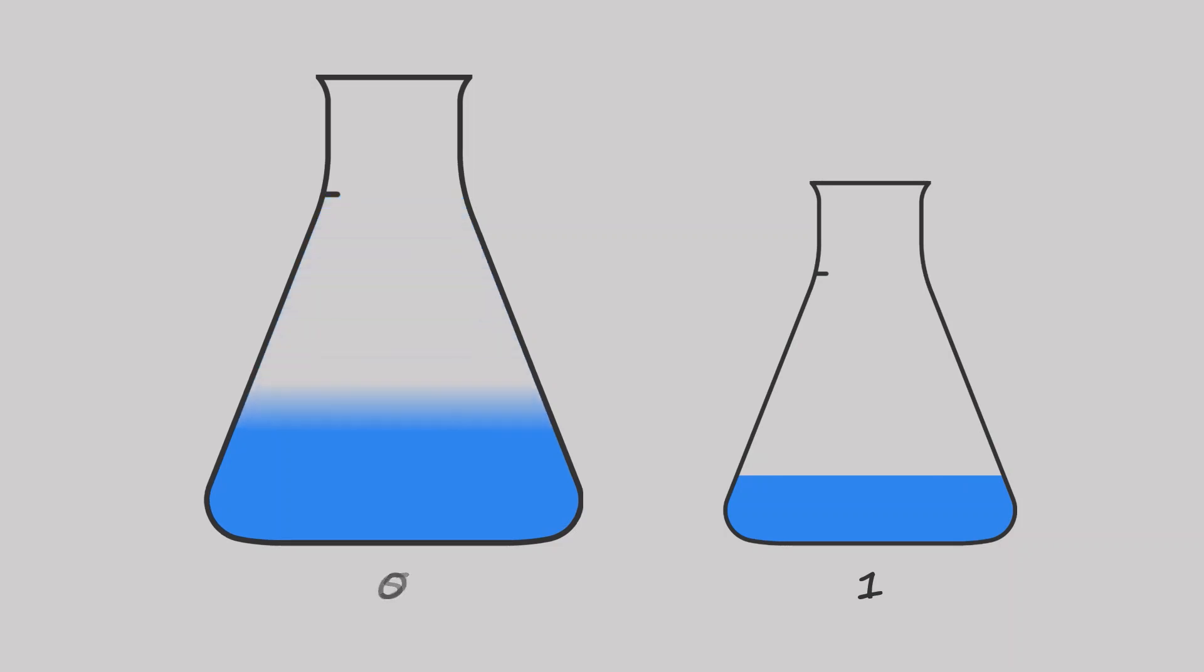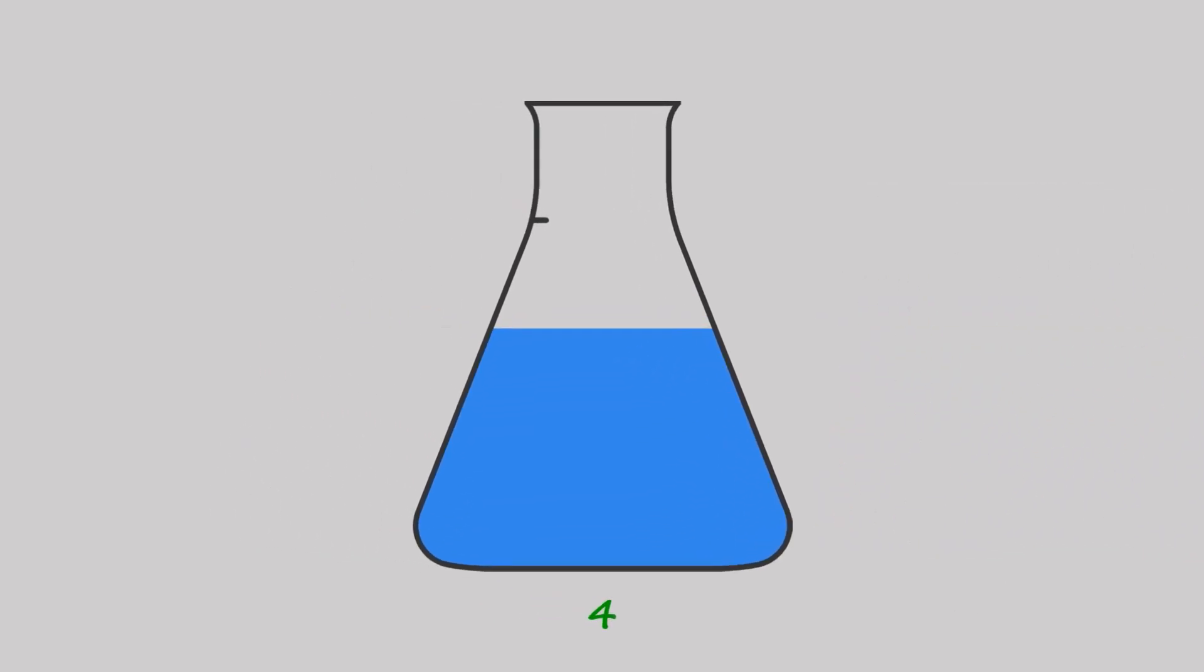You empty the big flask, pour 1 liter water to the big flask, you fill your small flask again, and pour the water into the big flask. This way you'll be left with 4 liters water in your big flask.